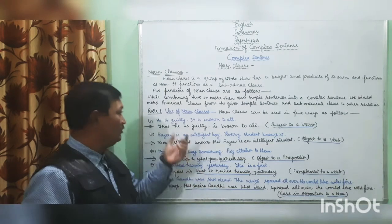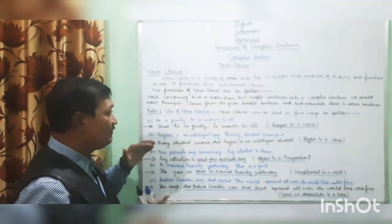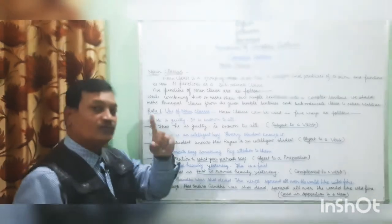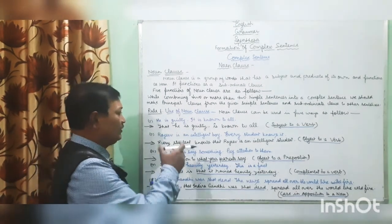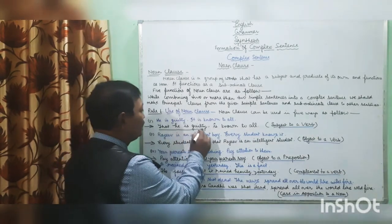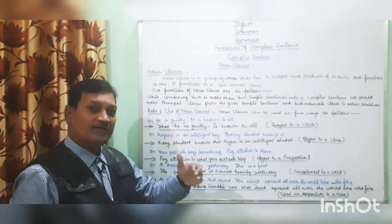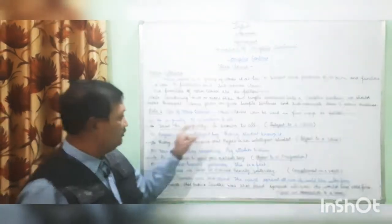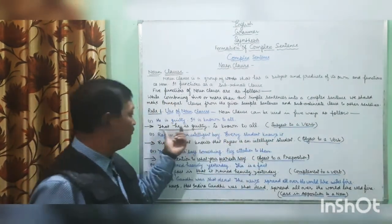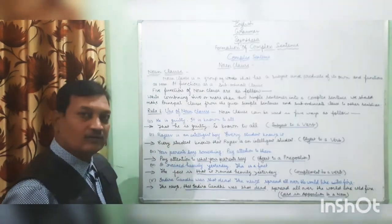Example: 'He is guilty. It is known to all.' Let's combine and make a complex sentence. Each sentence has one finite verb, so they are simple sentences. Combined: 'That he is guilty is known to all.' Here, 'that he is guilty' is the subordinate noun clause and it is at the place of the subject. So here the noun clause is working as subject to a verb.